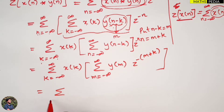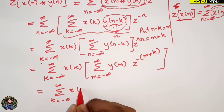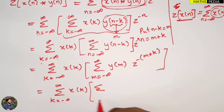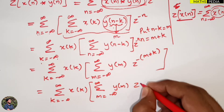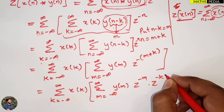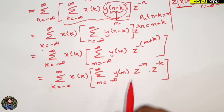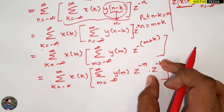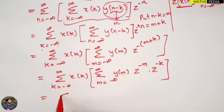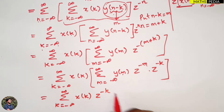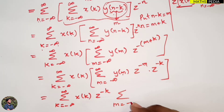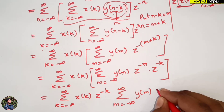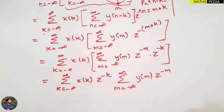Splitting Z^(−m−k) into Z^(−m)·Z^(−k), I can take Z^(−k) out of the inner summation. This gives: summation over k of X(k)·Z^(−k), times summation over m of Y(m)·Z^(−m).